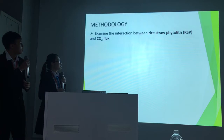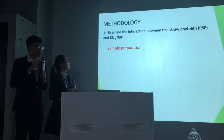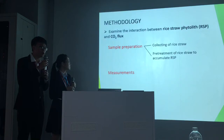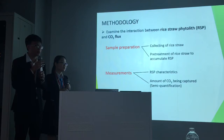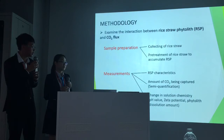To examine the interaction between rice straw phytolith and carbon dioxide, we follow this methodology. There are two parts. The first part is to prepare the sample by collecting the rice straw and pre-treating the rice straw to keep the phytolith. The second part is to do the measurements. First, we determine the phytolith characteristics. Next, we measure the amount of carbon dioxide captured. And finally, we measure the change in the solution chemistry, which includes the pH, the zeta potential, and the phytolith dissolution amount.